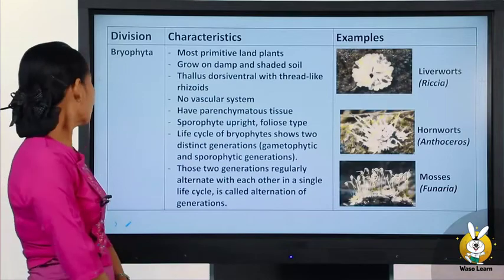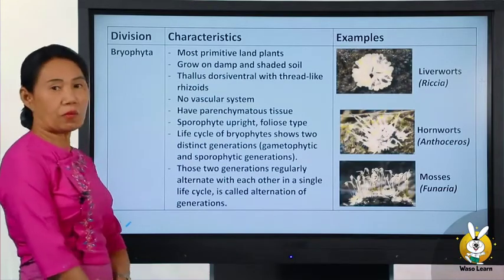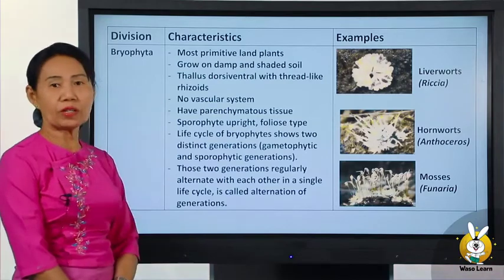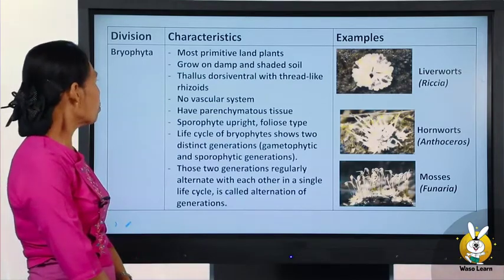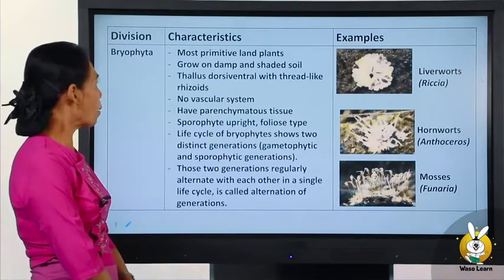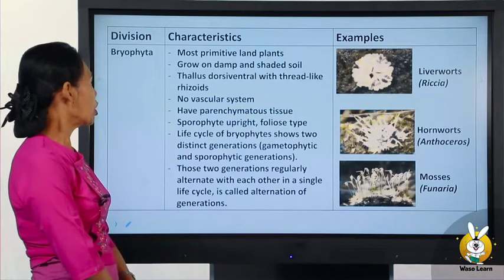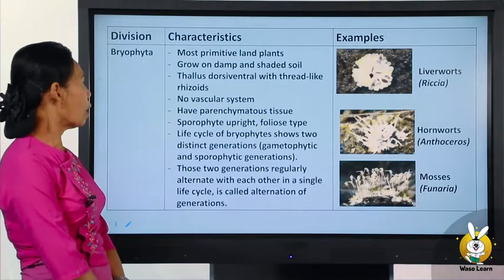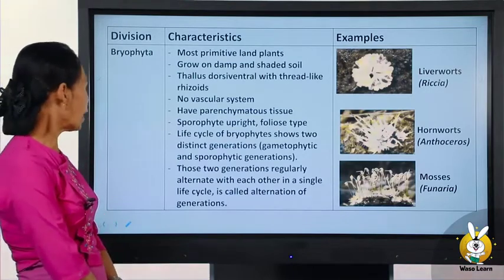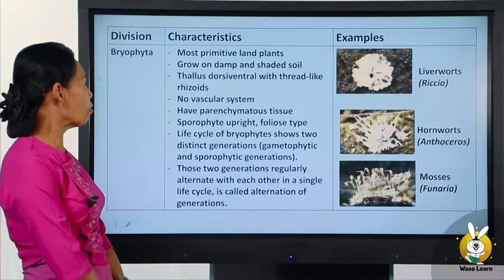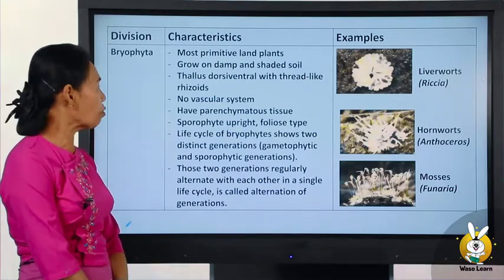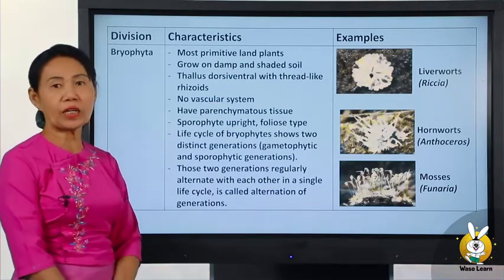The new body is called the bryophyte. Bryophytes are the most primitive land plants. They show a dorsal-ventral body structure with thallus life cycle, having dorsal and ventral surfaces.